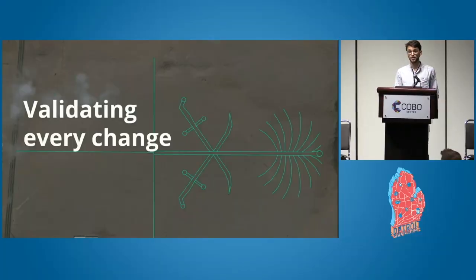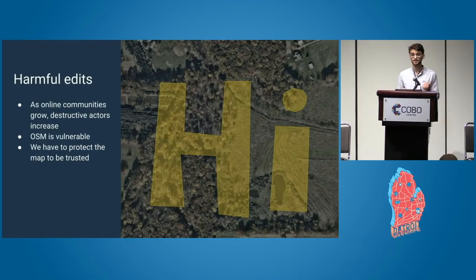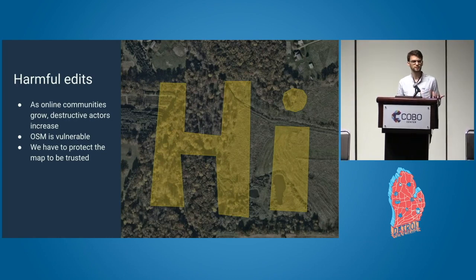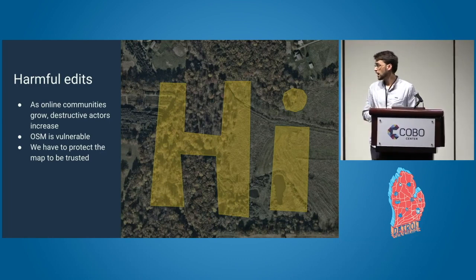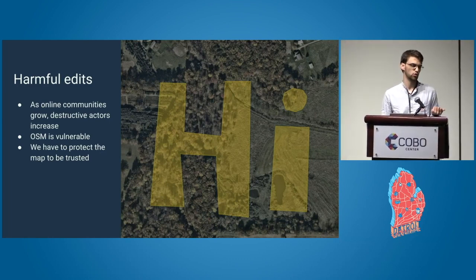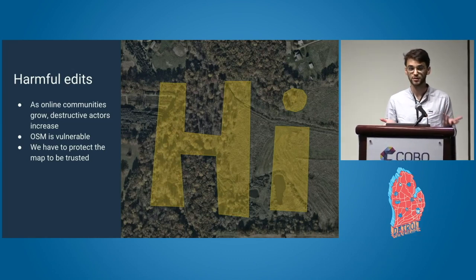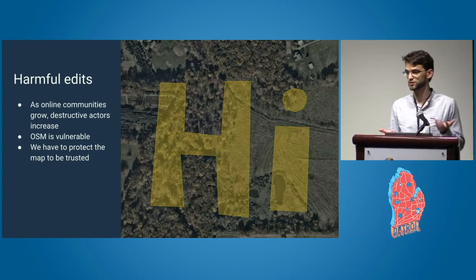The goal is: how can we validate every change in OpenStreetMap so we can guarantee nothing bad is in there? Over the past recent years, one thing that has come up again and again is vandalism. What we'd like to call them is harmful edits, because not always do you intend to break the map. This is actually normal — as online communities grow, you have more diverse actors from different backgrounds, and the amount of destructive actors grows.